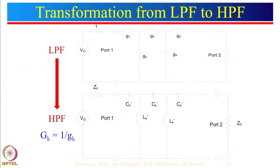Hello everyone. In the previous lecture we had seen how a low pass filter can be transformed to a high pass filter. For example, if you want a Butterworth or Chebyshev high pass filter, you start the design with the corresponding low pass filter, find all the G parameters, and then do two things: all inductors become capacitors and all capacitors become inductors, and the high pass filter G parameters are simply obtained by 1 divided by G_k, where G are the parameters corresponding to the low pass filter.